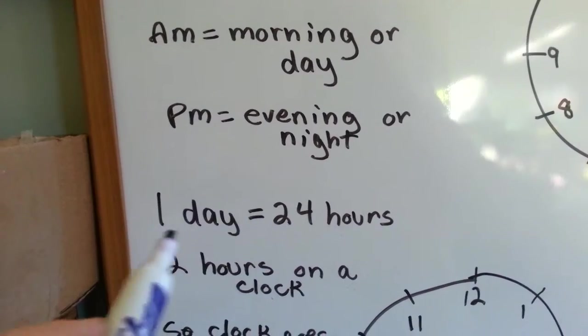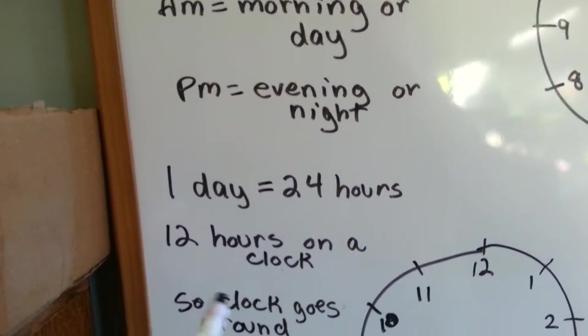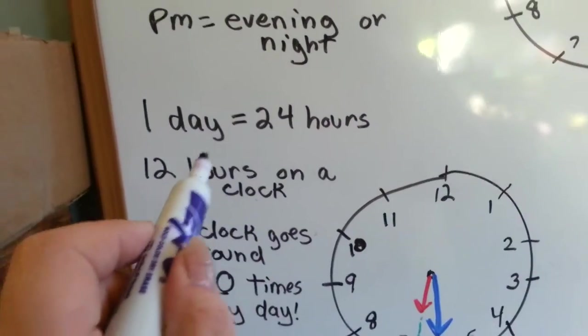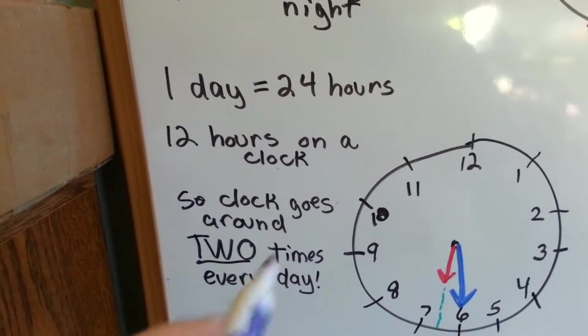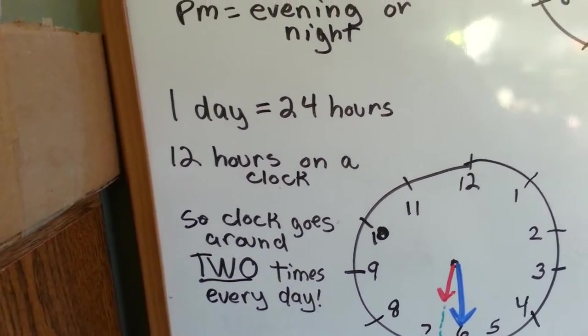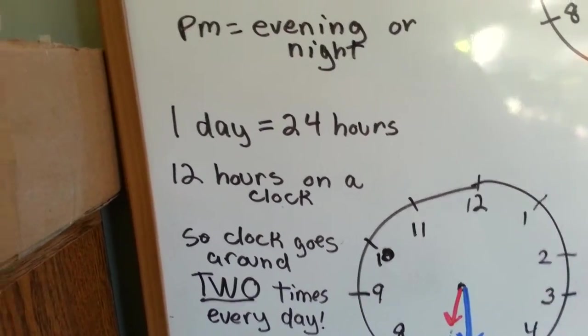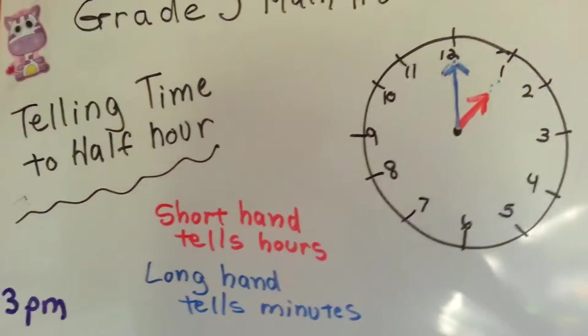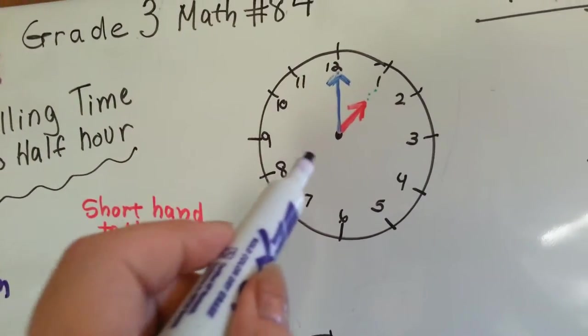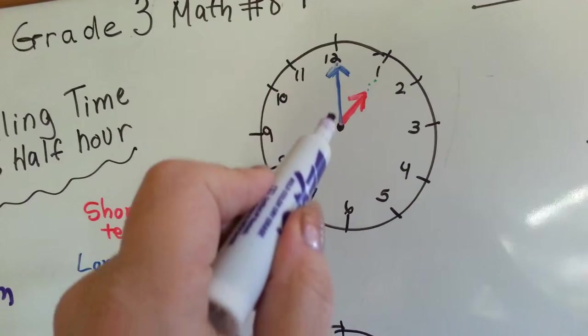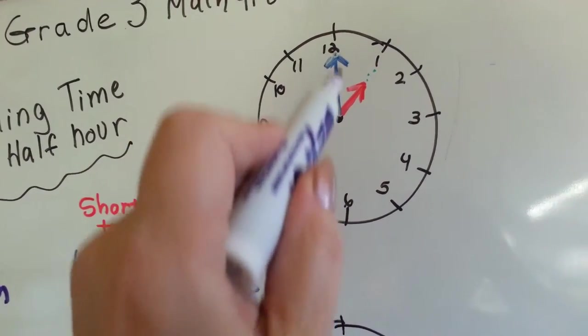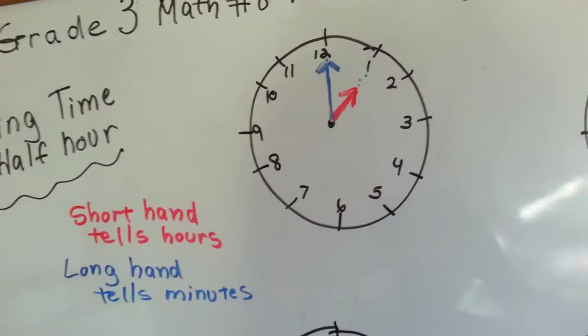Each day has 24 hours, but there are only 12 hours on a clock. So the clock has to go around 2 times every day. 12 plus 12 is 24. We're going to tell time by the half hour right now. We've got the hour hand pointing to the one hour and the long hand, the minute hand, pointing straight up on the 12.